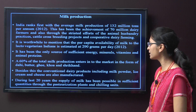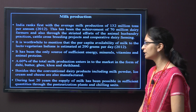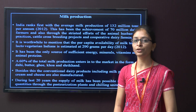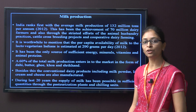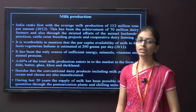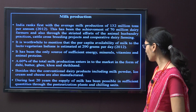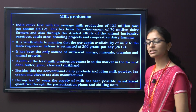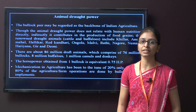About 60 percent of total milk production enters the market in the form of dung, butter, ghee, khoa, srikhand, and other dairy products like milk powder, ice cream and cheese. During the last 20 years, the supply of milk has been possible in sufficient quantities through pasteurization plants and chilling centers.